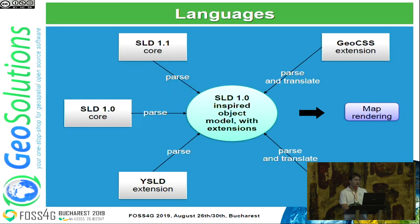People ask me what is the best, and different people have different answers. In GeoServer, historically, SLD is the main styling language. Then we started adding extensions like CSS, YSLD, and MB styles. They all translate down into an object model in memory — Java objects — which is based on SLD, and from there we can literally create an SLD file for you. Basically every language gets translated down to SLD.